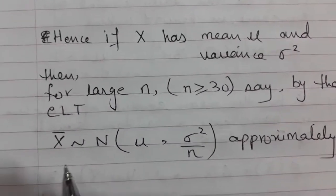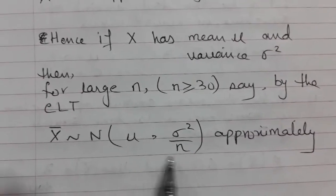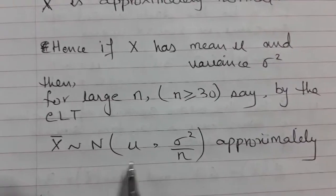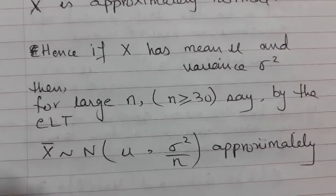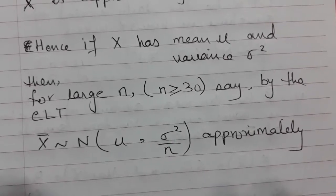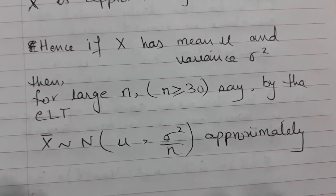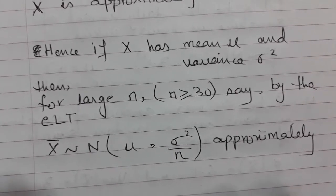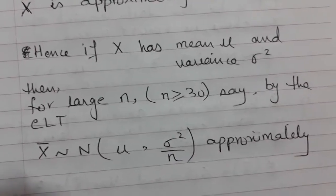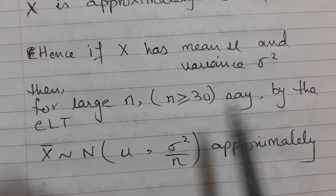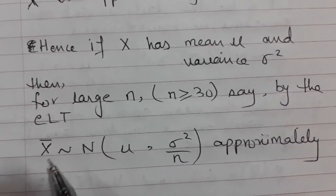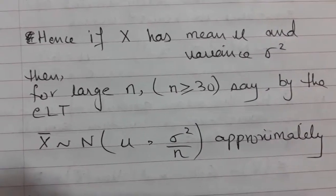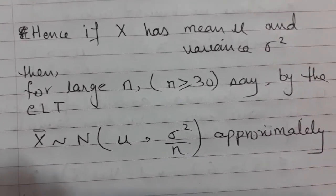The distribution of the sample mean is the same as what we used when taking a sample from a normal population. In a question, if the population is not stated to be normal but the sample size is greater than 30, you say: we apply the Central Limit Theorem because the distribution is unknown but the sample size is large, hence the sample mean distribution will be approximately normal and we use it to calculate probability.